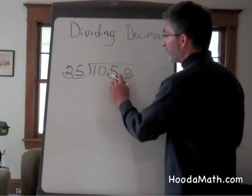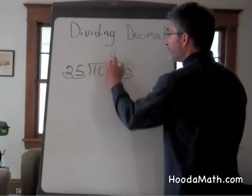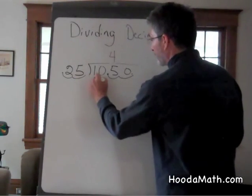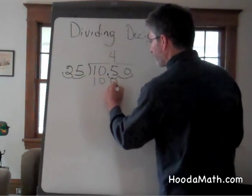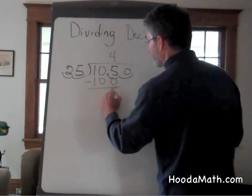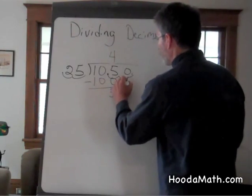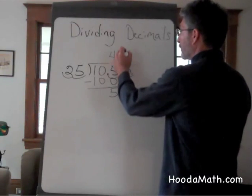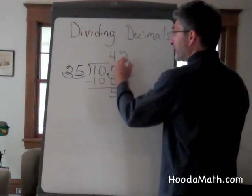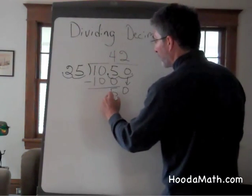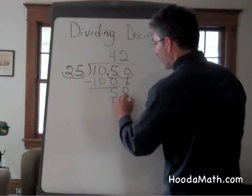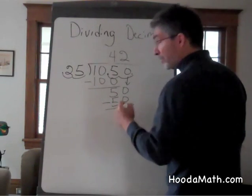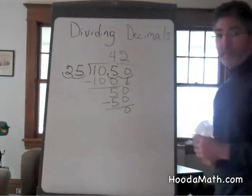25 into 105 goes 4 times. 4 times 25 is 100. Subtract, bring down the 0. 25 into 50 goes 2 times. 2 times 25 is 50. Subtract and you have no remainder.